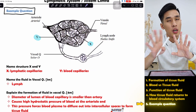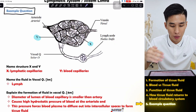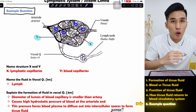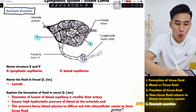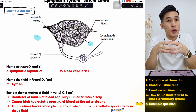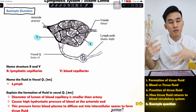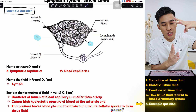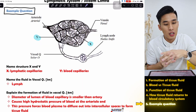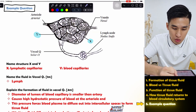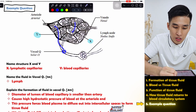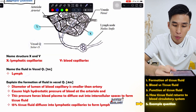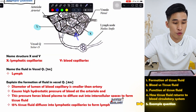For those who cannot differentiate which is which: your lymphatic capillaries are always open-ended, while your blood capillaries are enclosed. You can also remember that lymphatic capillaries always intersect with blood capillaries. For the fluid in vessel Q — once you enter the lymphatic capillaries or lymph vessels, that fluid is called lymph. If they point to the intercellular spaces, then it is tissue fluid.